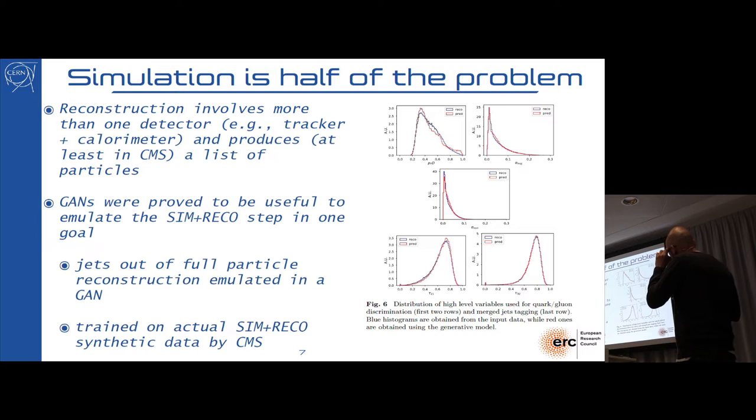There is a paper that came out recently that used a CMS open data set. CMS is the experiment and part of it is putting every year online the data set collected five years before. These people trained a GAN to give in output a particle jet, which is the spray of particles that comes out from radiation of quarks and gluons, directly after reconstruction.